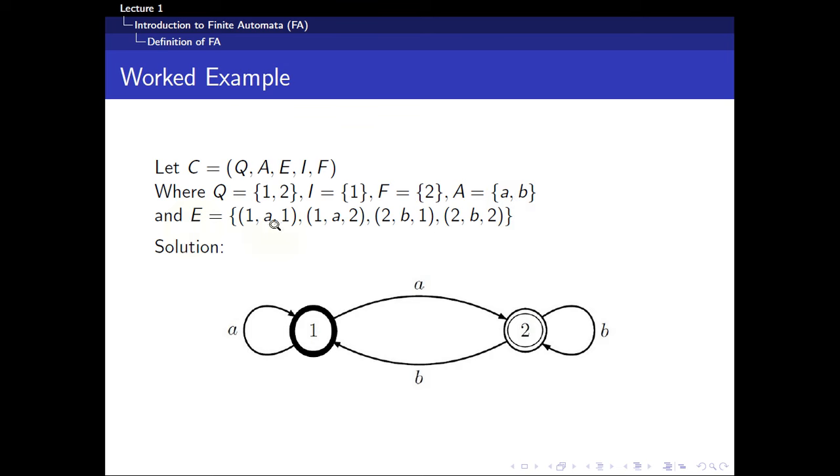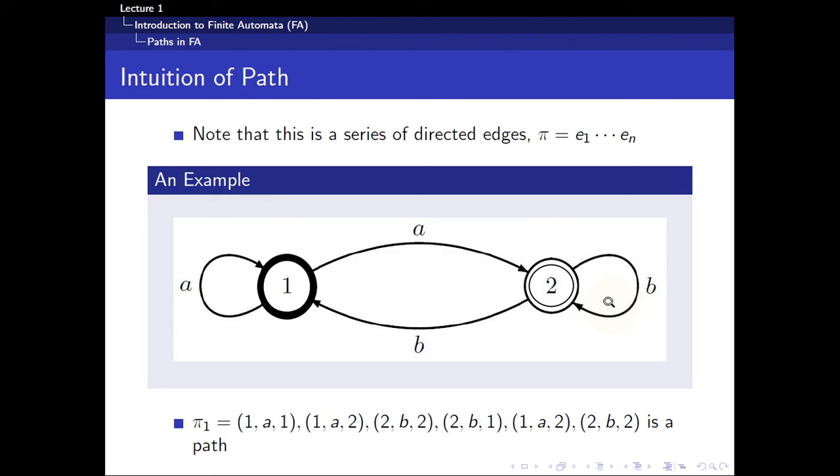For example, 1A1 will represent this particular transition. You start from 1, go through A, go back to 1. The second one, 1A2, you start from 1, go through A and you end up in 2. And so on and so forth. 2B2 will represent this particular transition here. This is a very basic example of a finite automaton. Moving on, I have to introduce the idea of a path. What is a path? Well it's pretty intuitive. A path is just a set of directed edges starting from E1 all the way to EN. By edges I really mean the transitions, the state transitions.